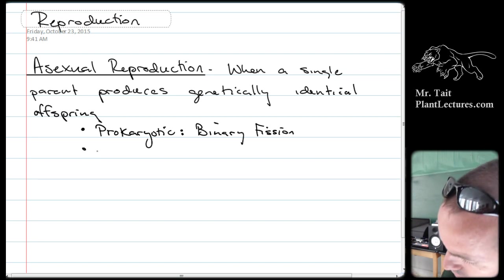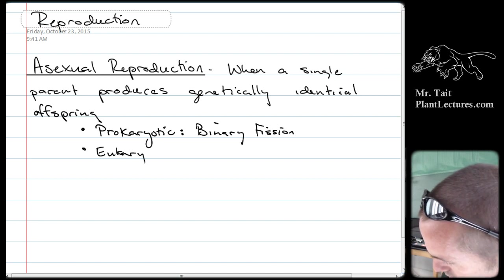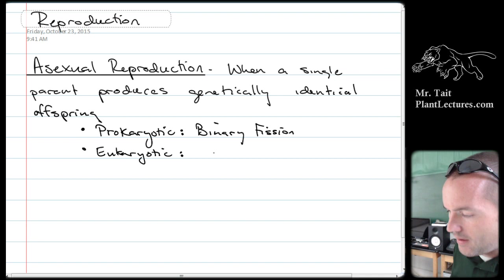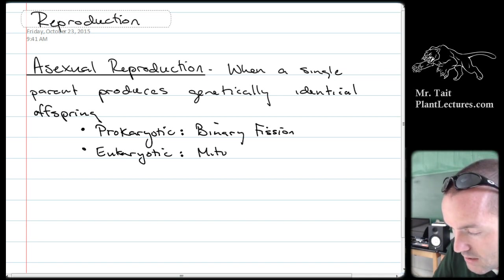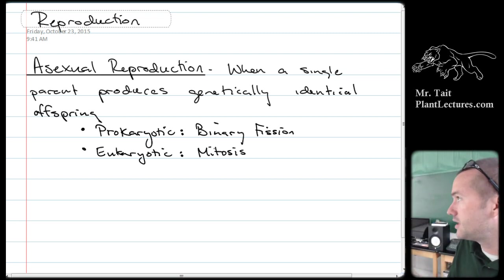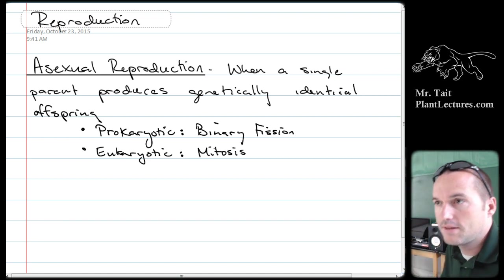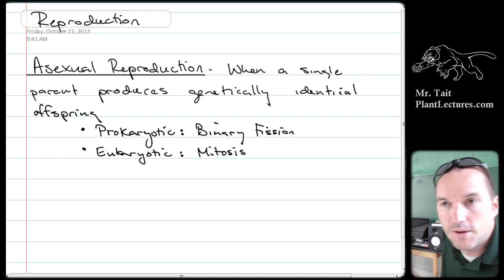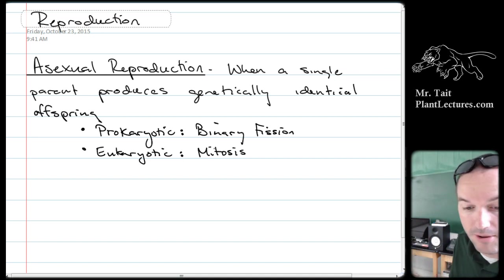Eukaryotic cells have asexual cell division, and we call that mitosis. That's the type of reproduction that results in genetically identical offspring. That's why your cells can reproduce through mitosis — it's going to create an identical copy of the cell it came from.